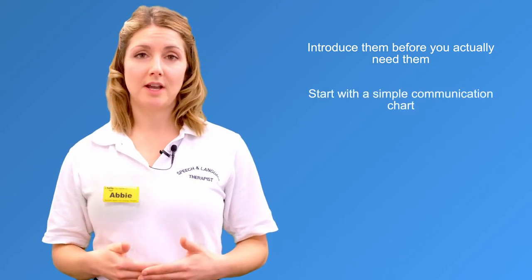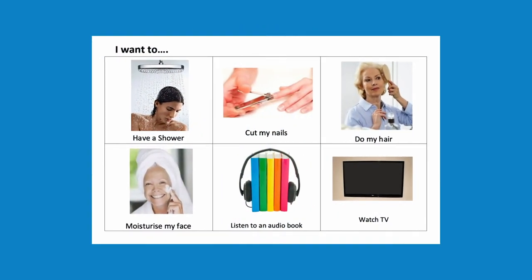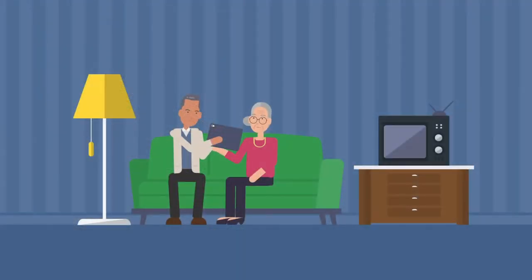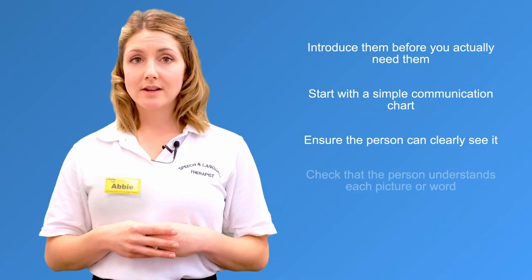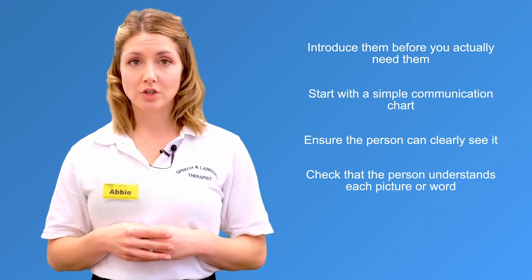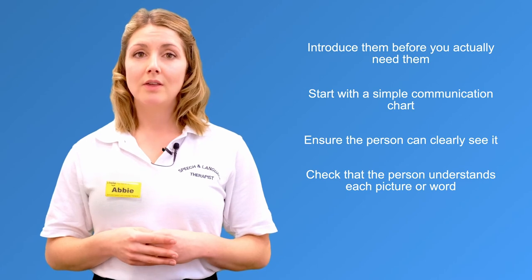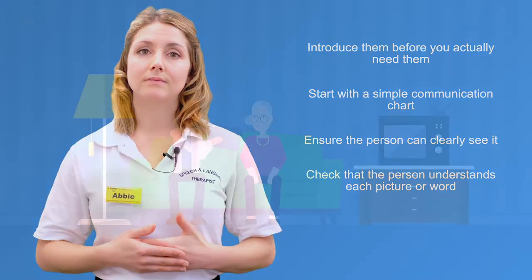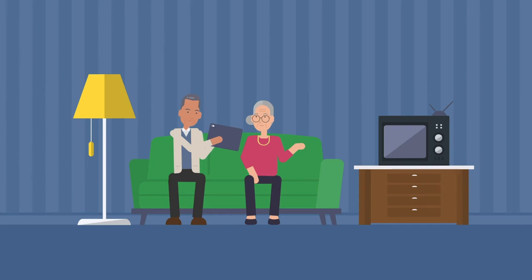Start with a simple communication chart with between two and six pictures like this. Hold the chart between you so the person can clearly see it. Make sure they're wearing any glasses or hearing aids if they use them. Check that the person understands each picture or word by asking them to point to some specific items on the page. Then demonstrate how you'd use it. Both of you should use the charts in your conversations, so make sure that you refer to the pictures when you're talking too.